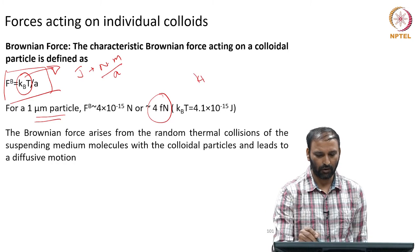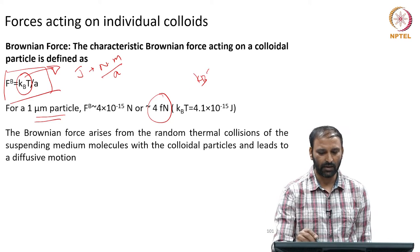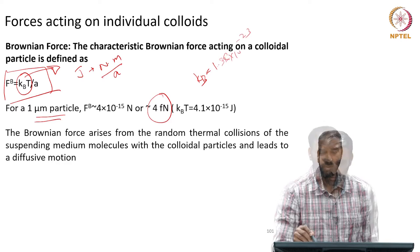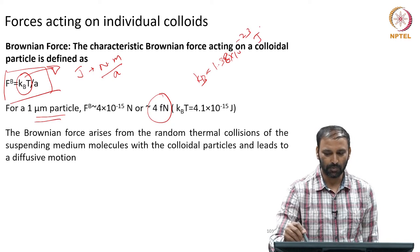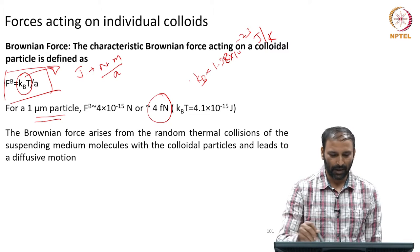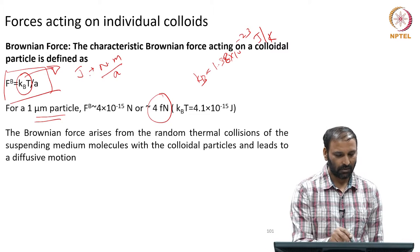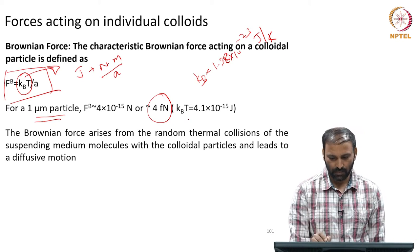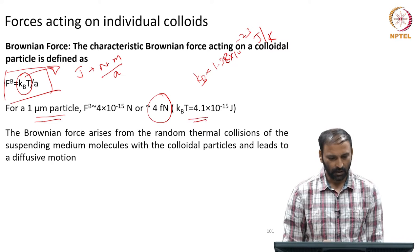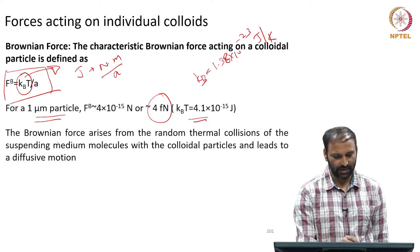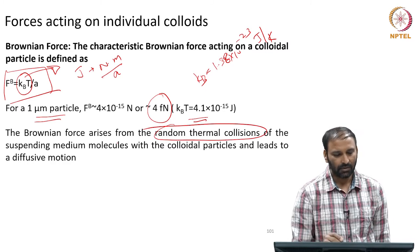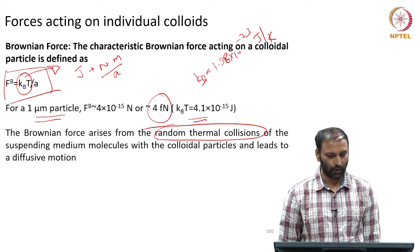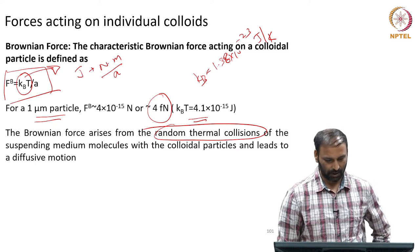kB is 1.38×10⁻²³ joules per kelvin; multiply by temperature to get kBT and arrive at these numbers. The Brownian force arises because of the random collisions of molecules with the particles.